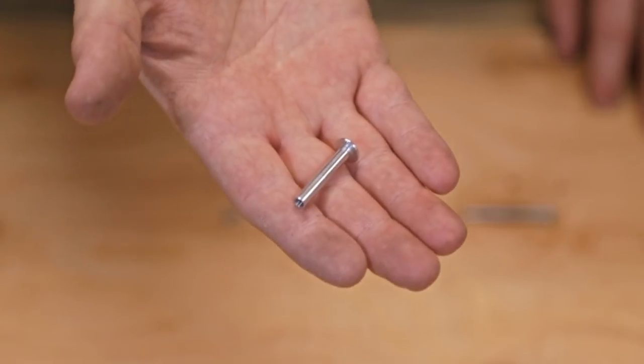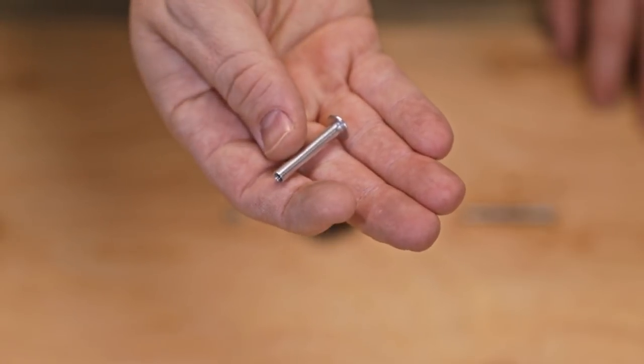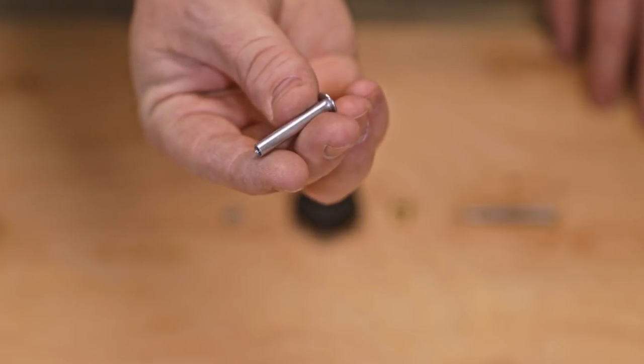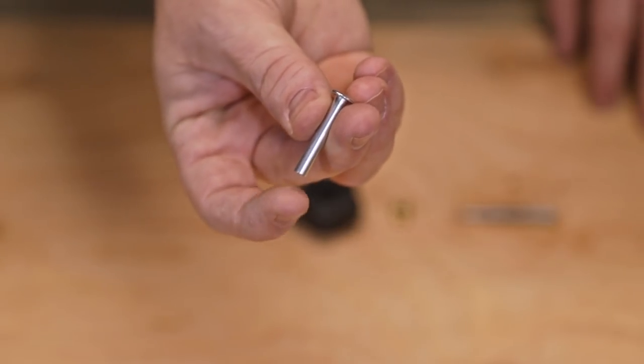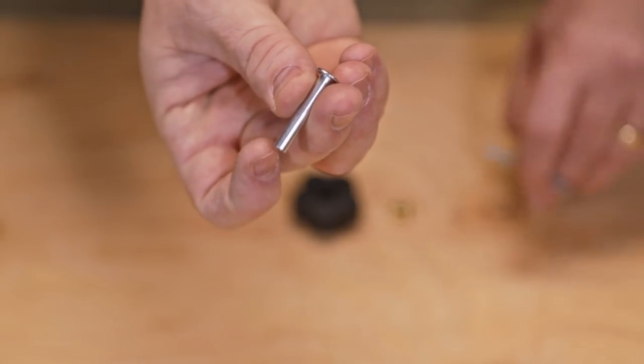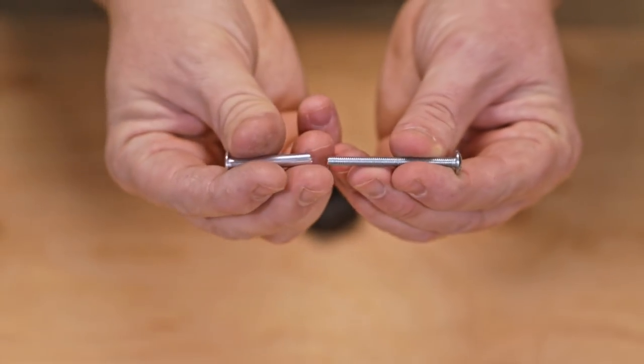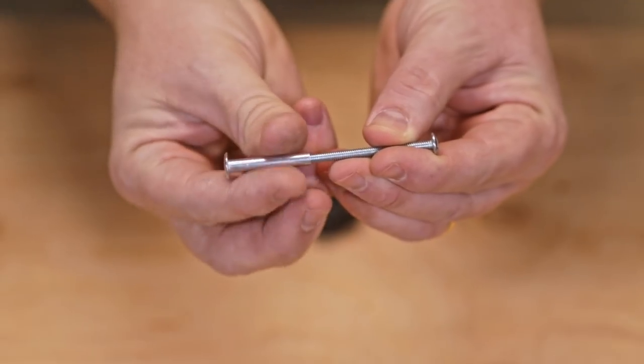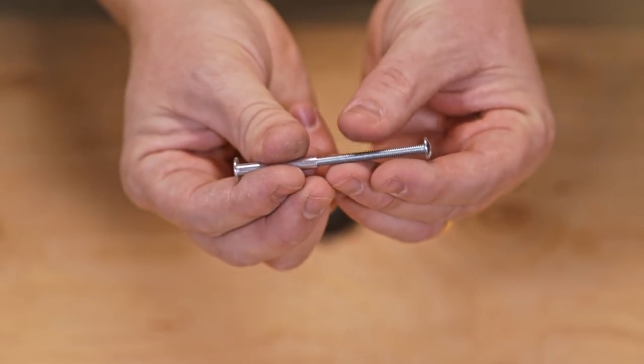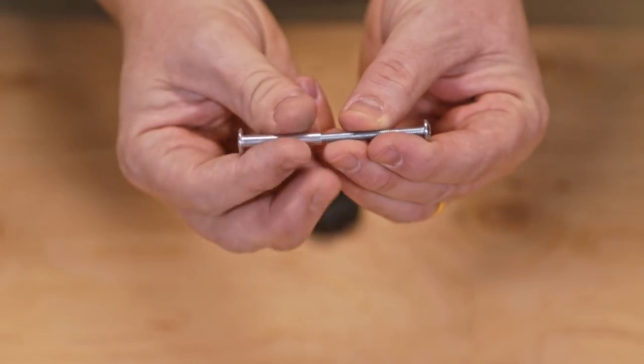You're also going to need a small washer that is sized to go with whatever size machine screw that you use. You can pick up a bag of little washers like this for about a dollar. And the last thing you're going to need is a threaded post like this. It was about a dollar, and it comes with a small little screw that threads into this end, but we're not going to use that small little screw. We need a longer one. So make sure when you're picking up the threaded posts that you get one that will match the size of the screw that you bought for the machine screw side of things.